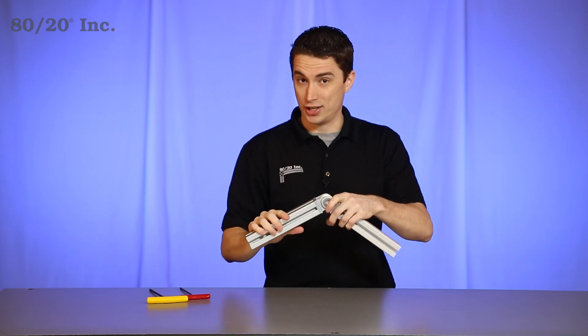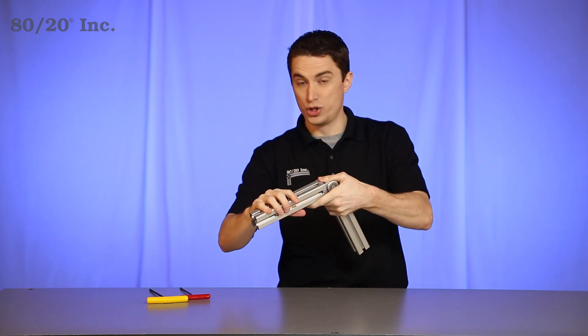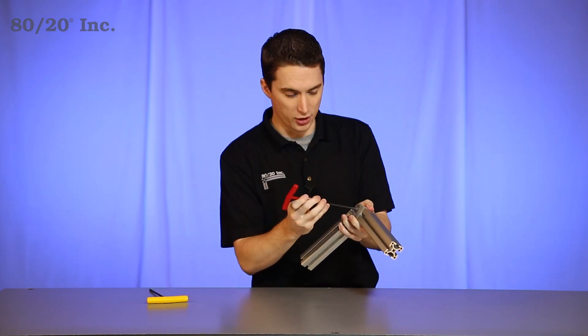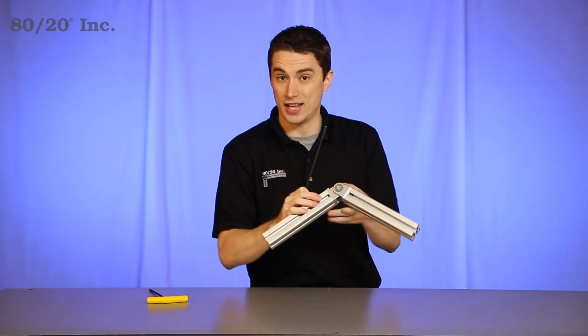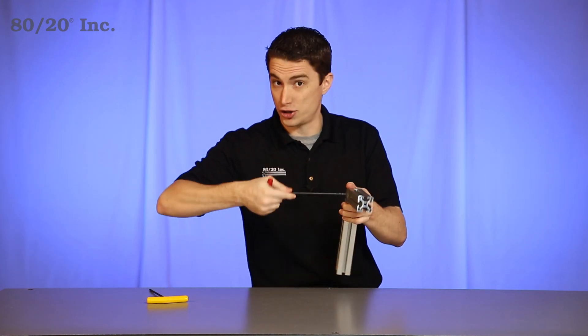Once you have that done, the last thing you've got to do is pick your angle. Once you have that angle picked out, you'll take your other wrench and tighten down those bolts on the pivot joint itself. That locks the angle into place and gives you a strong, secure connection.